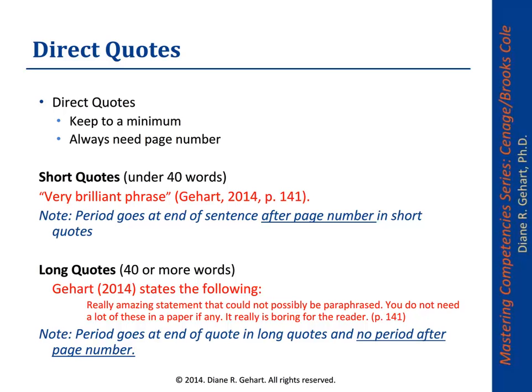Direct quotes are often the bane of existence of thesis and dissertation students with fifty to a hundred references — they've done direct quotes and forgot the essential element, which is to always cite the page number when you have a direct quote. In general, keep your direct quotes to a minimum and just where needed, but you do need that page number. For a short quote — something under forty words — you might have a short sentence or brilliant phrase. Notice that even if that phrase ends in a period, you do not put a period there. Instead, you put the parentheses with the author's last name, comma, year, comma, p. for page, and then the page number. The period goes at the end, right after the closing parenthesis.